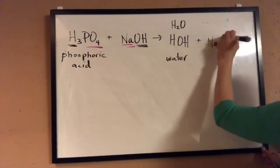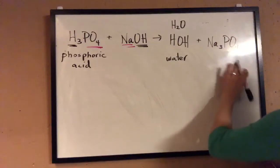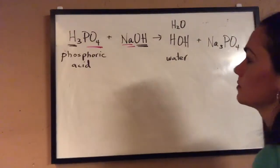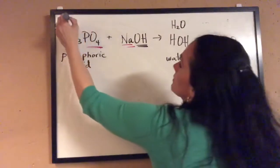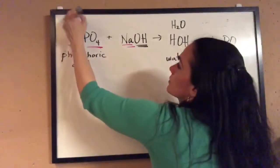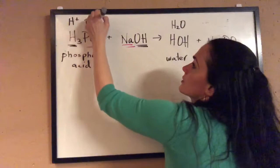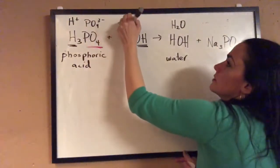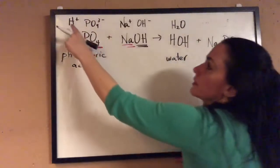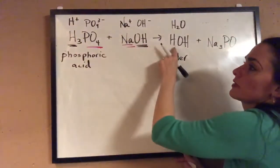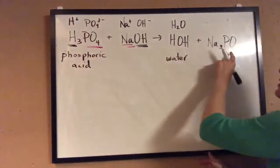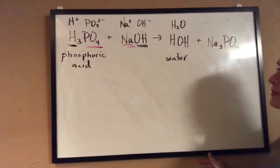For CHEM 110 you're not expected to predict products, but just in case you're wondering: hydrogen is plus one, phosphate has a minus three, sodium is plus one, and hydroxide is minus one. So hydrogen and hydroxide come together to form water, and sodium and phosphate come together to form sodium phosphate.